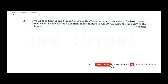Question 2 says: two types of flour, x and y, cost 60 Kenya shillings and 72 Kenya shillings per kilogram respectively. The two types are mixed such that the cost of a kilogram of the mixture is 70 Kenya shillings. Calculate the ratio x : y of the mixture. Since x is 60 KSh/kg and y is 72 KSh/kg, we can write: 60x + 72y is equivalent to 1 kg.